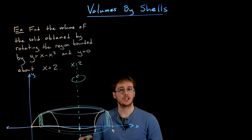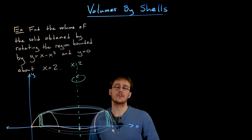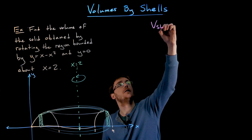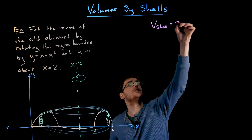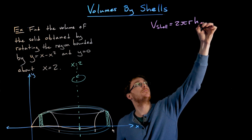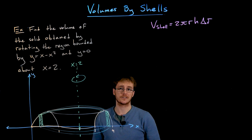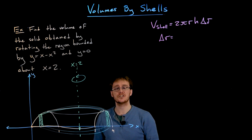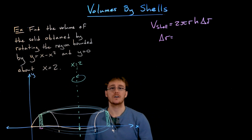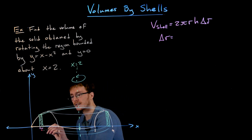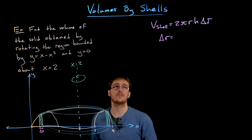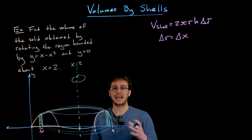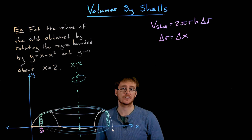Now that we have a rough sketch, we can piece together the formula for our cylindrical shell approach. The general formula for a single shell is 2π times the radius times the height times delta r. The thickness delta r comes from the thickness of our approximating rectangle — a small change in horizontal values — so delta r equals delta x. This tells us everything must be written as a function of x.